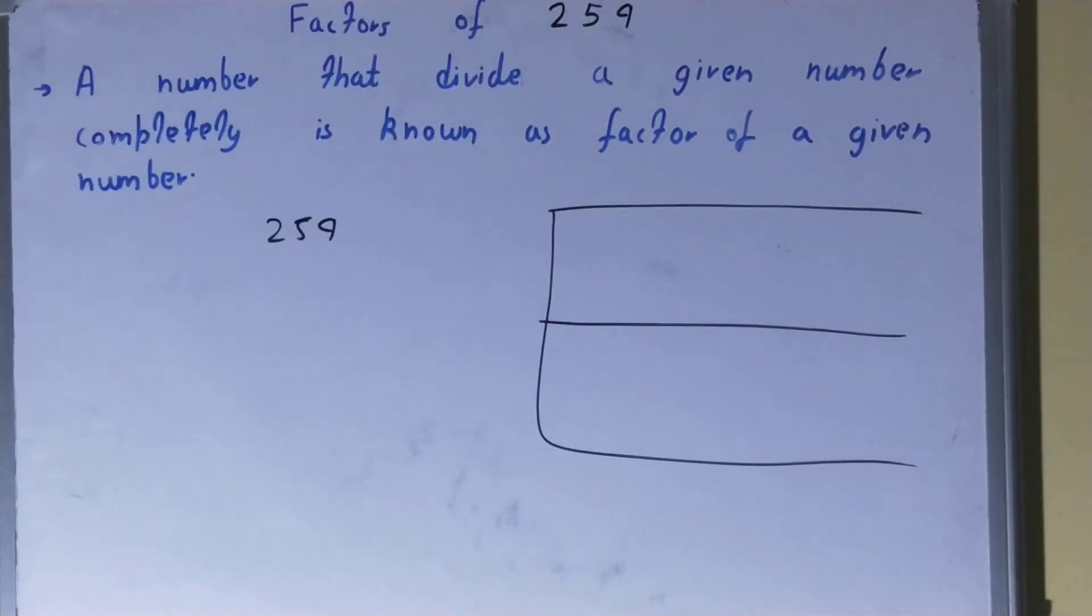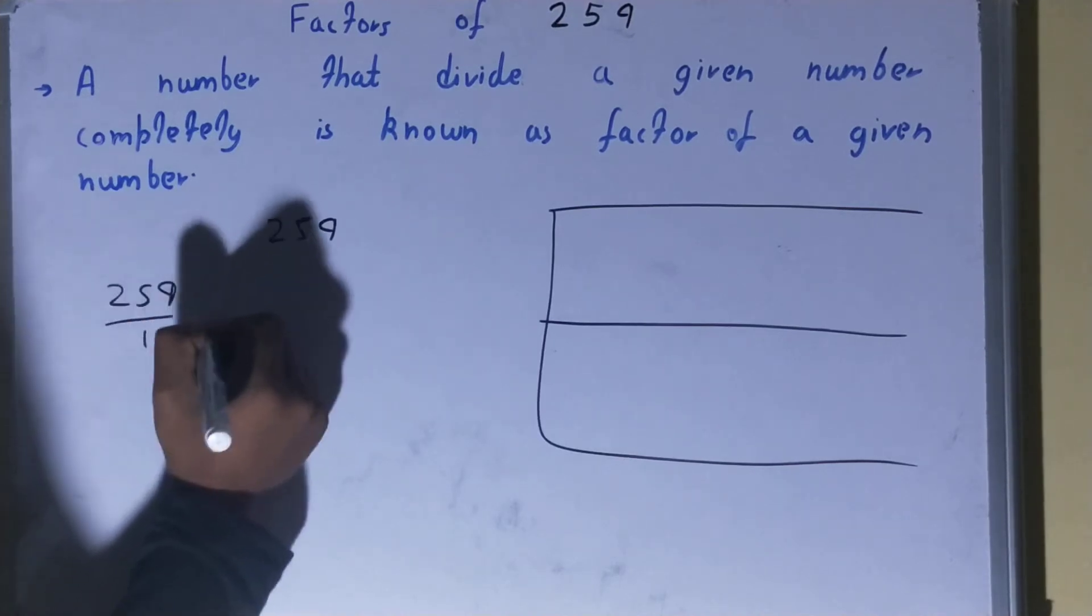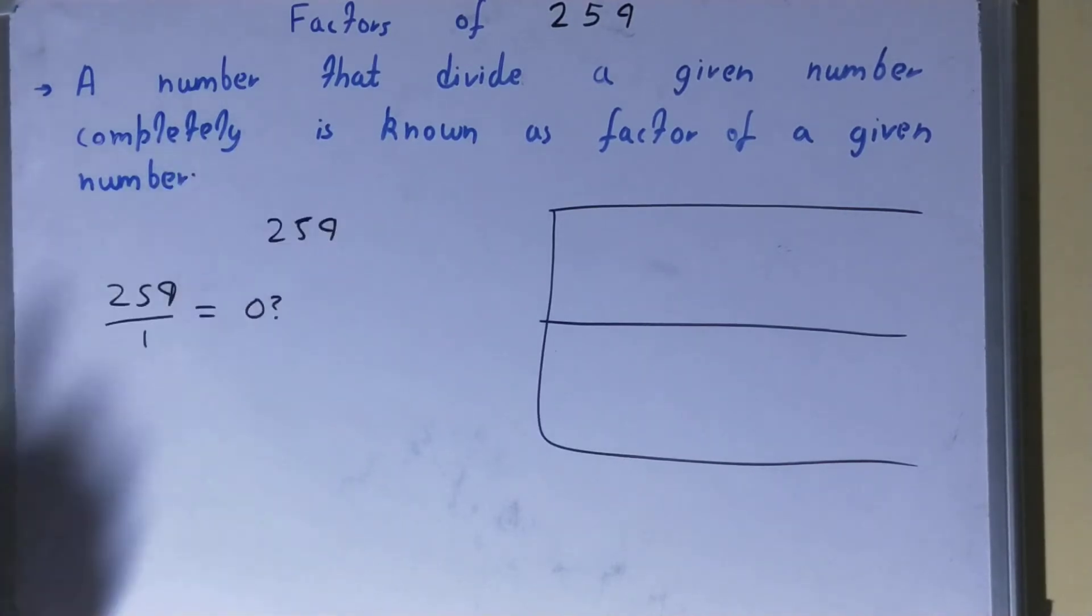Once you are done with that, you need to start with the lowest natural number, that is 1. Divide the number 259 by 1. If you do so, will you get the remainder zero? The answer is yes. So because you will get the remainder zero, you can say 1 is the factor of 259.